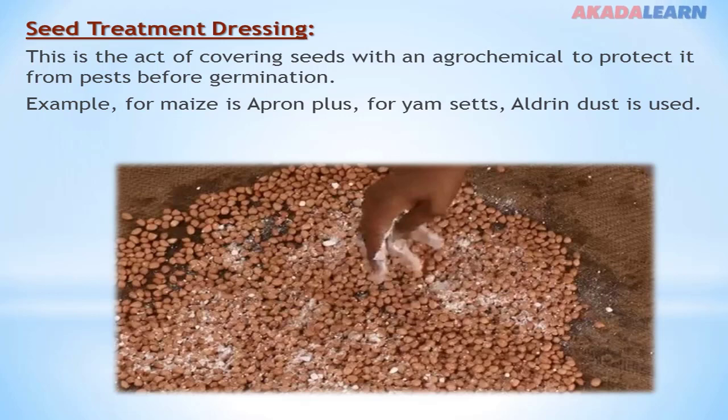There is a need for seeds to be protected when sown in the soil, protected against diseases and pests. Because there is possibility of pests picking out the seeds even before they germinate, and this can result in loss to the farmer. So for that to be taken care of, the seeds are treated or dressed with chemicals that will protect them.